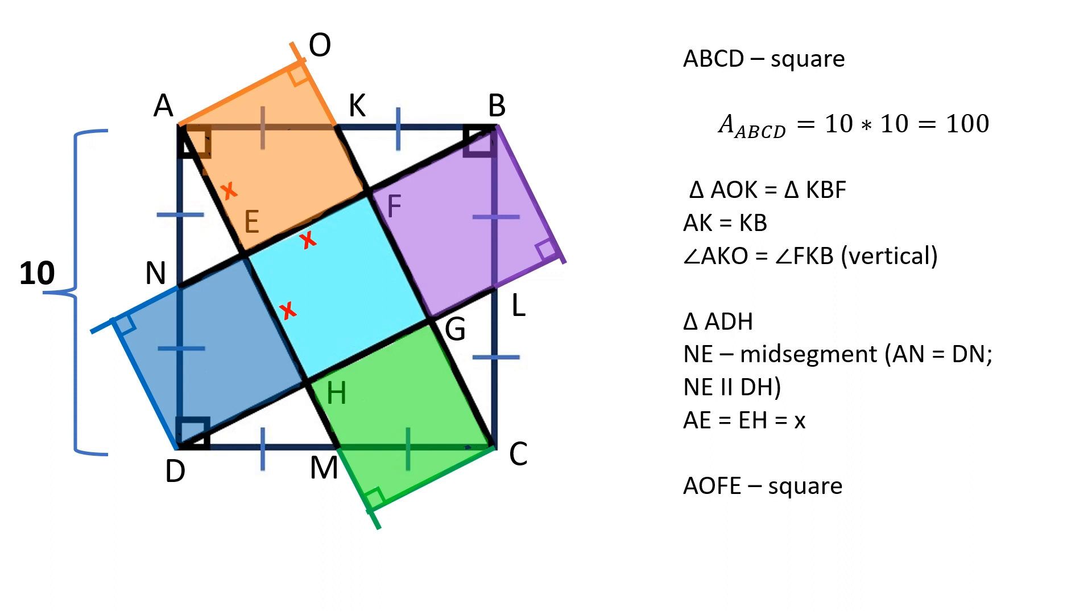The square ABCD consists of five congruent squares. The area of the square EFGH is equal to 100 divided by 5, which is 20 square units.